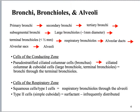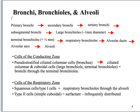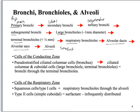In this slide, I am organizing information for you, showing big to smallest structures. You've got primary, which is also called main; secondary, which is lobar; tertiary, which is segmental; then it goes to subsegmental, large bronchial, terminal bronchial, respiratory bronchial, alveolar ducts, alveolar sacs, alveoli.